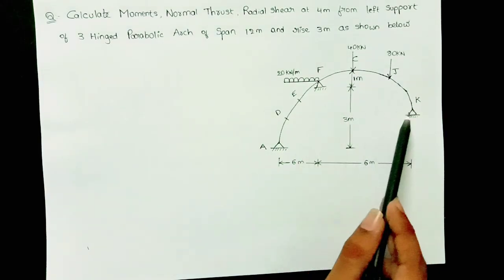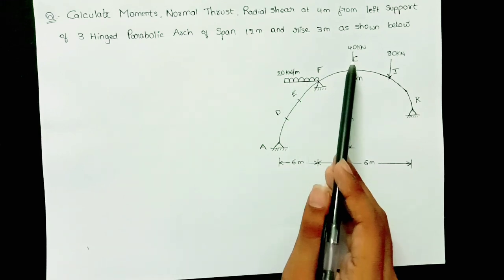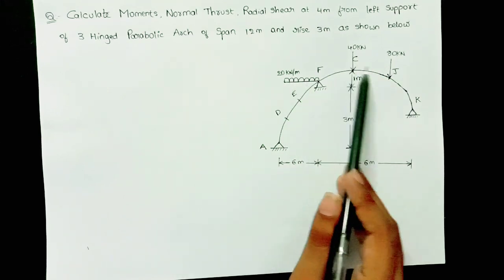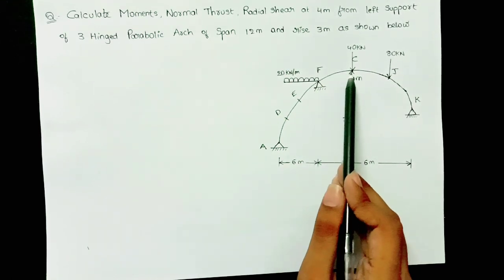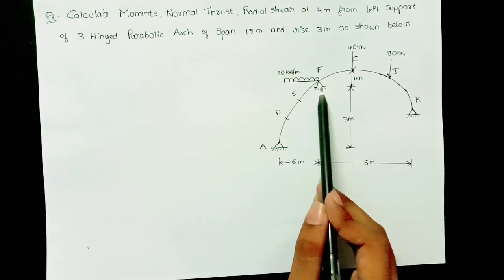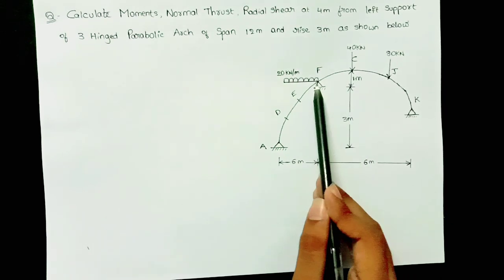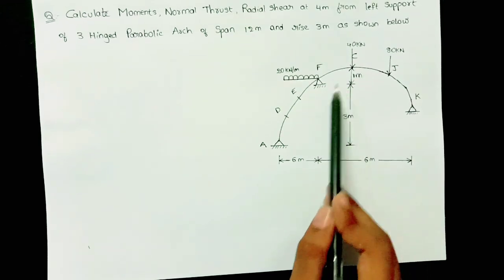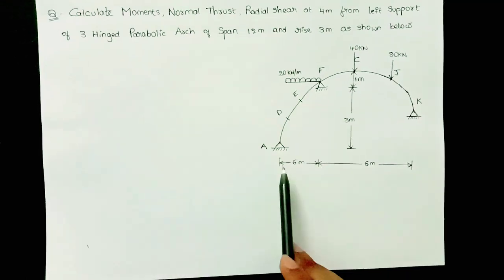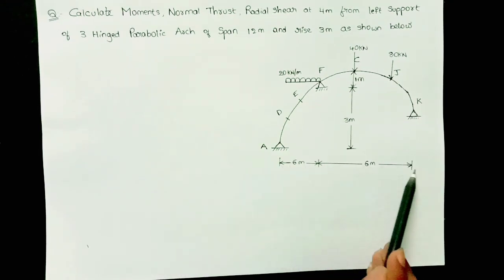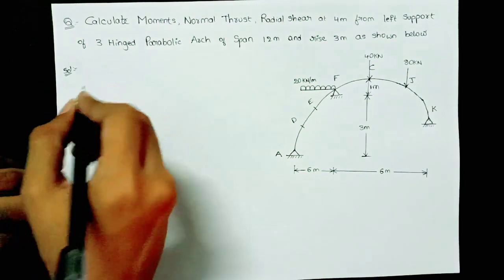The arch has two supports at different levels. We are having a UDL at one portion, two point loads at C and J, and the difference in levels between F and C is 1 meter. The rise is 3 meters, and the span is divided as 6 meters plus 6 meters, giving a total span of 12 meters.